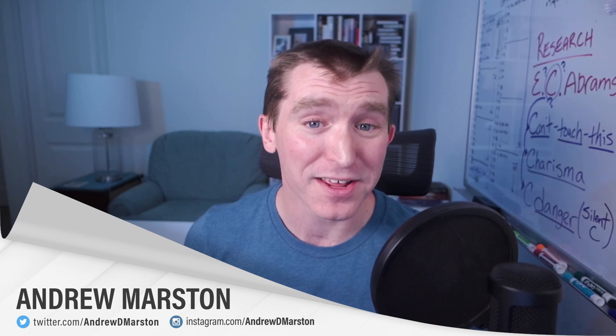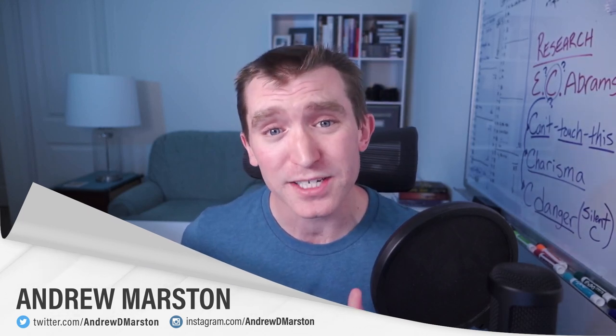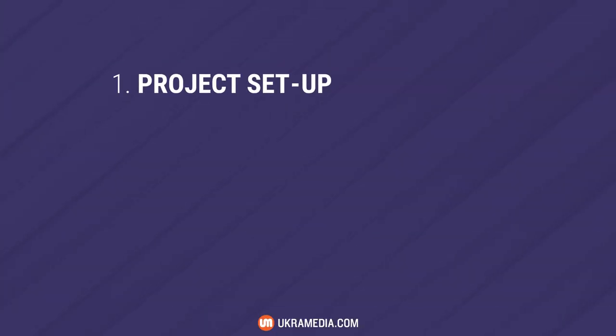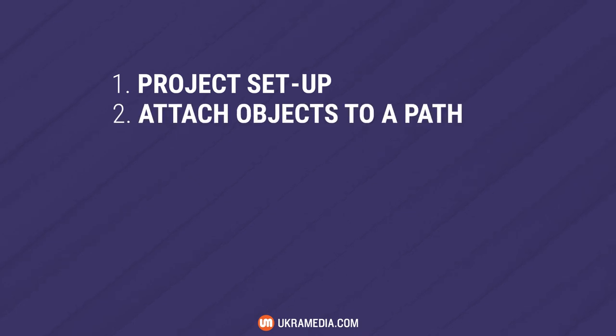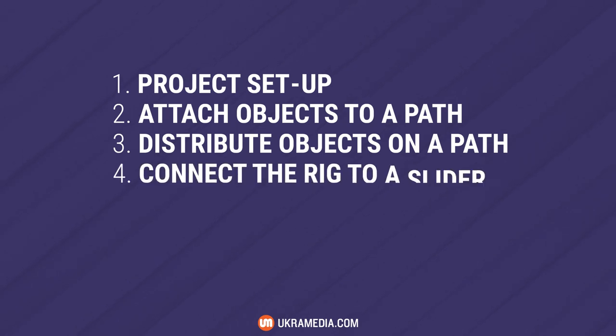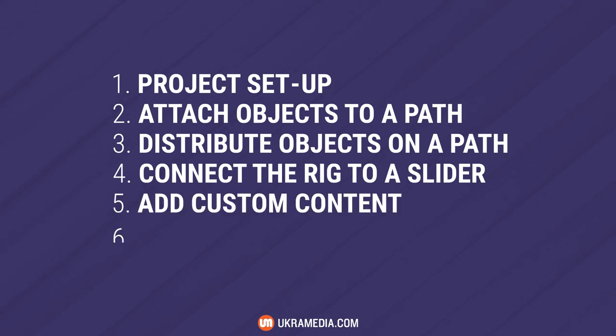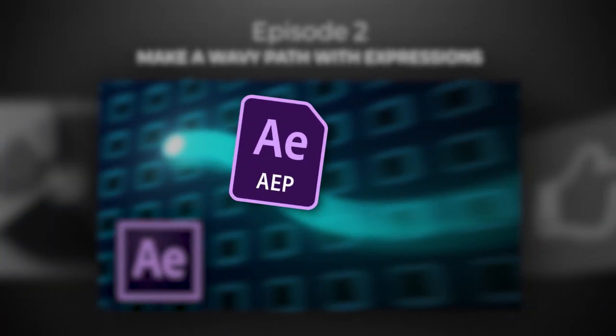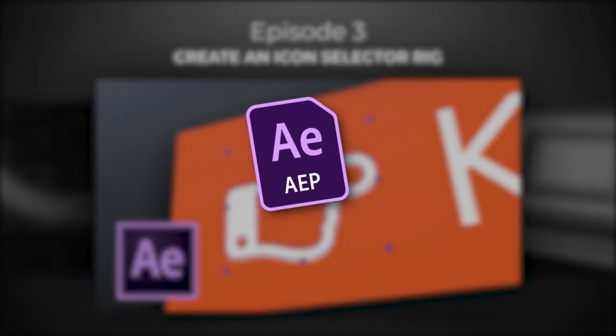I'm Andrew Marston for the UkraMedia YouTube channel, and today we're tackling the common motion design task of making a carousel. We're going to be using quite a few expressions, so buckle up, but when we're finished we'll have a flexible rig that you can easily add or remove objects to and from and control it all with a single slider. First, we'll go over how to set up the project, then we'll attach all our carousel objects to a path and make After Effects evenly space them along this path. Lastly, we'll connect the whole rig to be controlled by a slider, add our own custom content, and make it 3D. You can download the project file used in this tutorial via the link in the description.